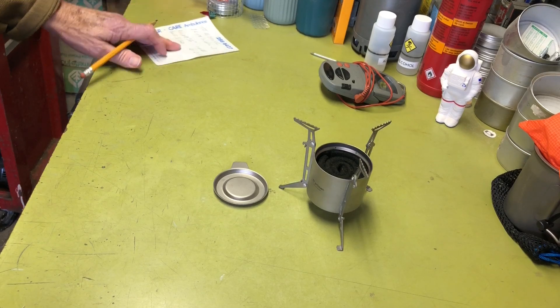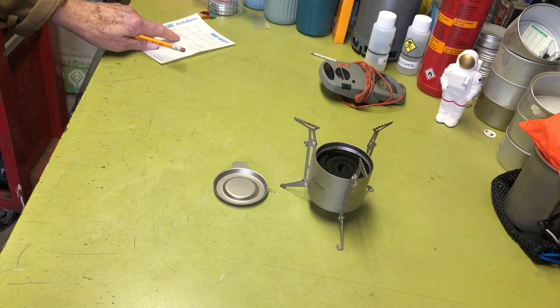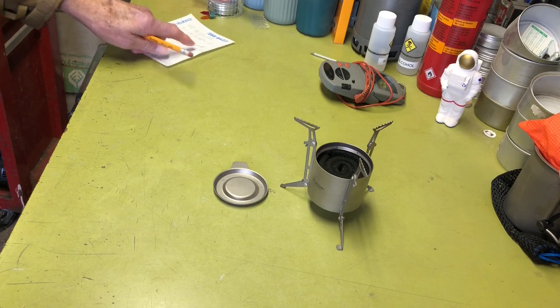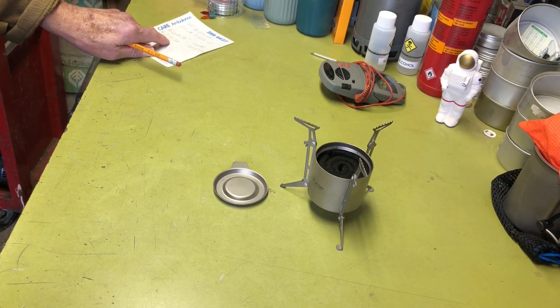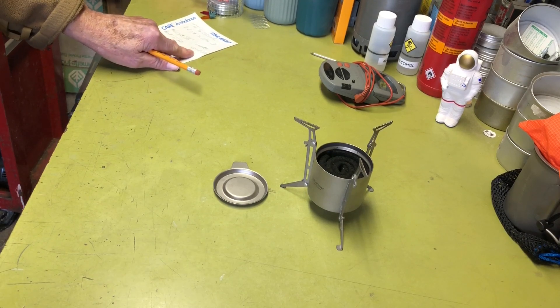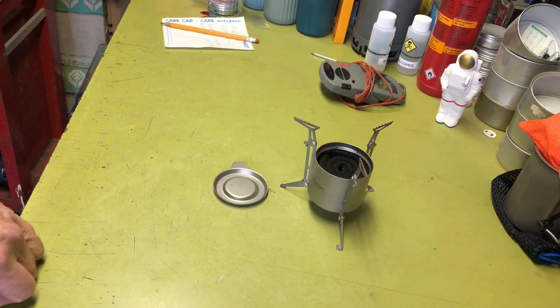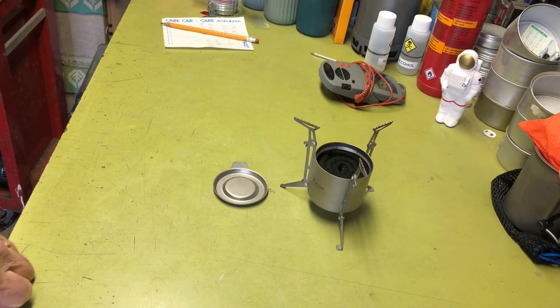When I did it without the carbon felt, just the basic stove, I had 16 ounces of 56 degree water and with one ounce of alcohol. The boil time was five minutes and 50 seconds, and the stove ran out at about six minutes and 34 seconds. That's what we're going to be comparing against today.